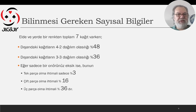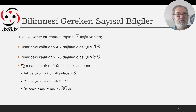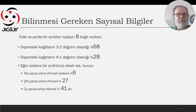Bizim tarafta yedi kağıt var, altı kağıt dışarıda. Ezbere bilmemiz gereken: dört-iki olma olasılığı yüzde kırk sekiz, üç-üç olma olasılığı yüzde otuz altı. Sadece bir onörümüz eksikse bunun tek parça olma ihtimali yüzde üç, çift parça olma ihtimali yüzde on altı, üç parça olma ihtimali ise yüzde otuz altı. Bizim tarafta sekiz kağıt var, beş kağıt dışarıda. En yüksek olasılık üç-iki dağılma: yüzde altmış sekiz; dört-bir dağılma: yüzde yirmi sekiz. Tek onörümüz eksik: tek parça yüzde altı, çift parça yüzde yirmi yedi, üç parça yüzde kırk bir.